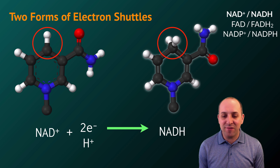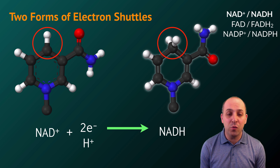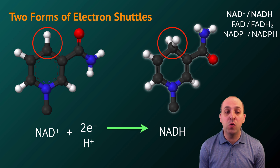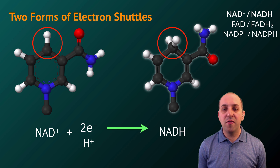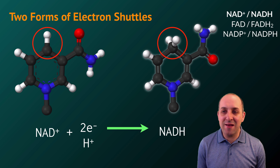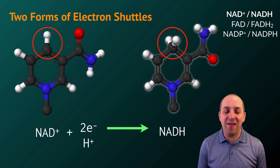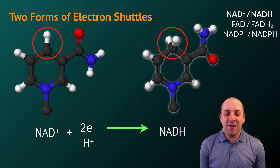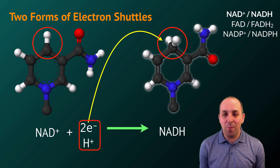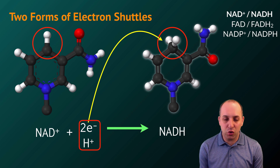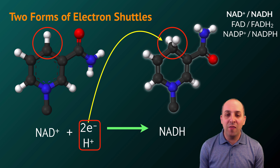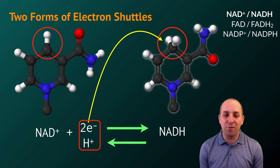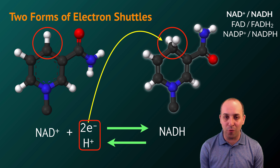NAD+ has been converted into NADH. In order to do this, it had to accept two electrons from another molecule. This is what we mean when we say that NAD serves as an electron shuttle — the oxidized version takes electrons from another molecule and is converted into the reduced form. Later on in metabolic reactions, the reduced form will be converted back into the oxidized form.